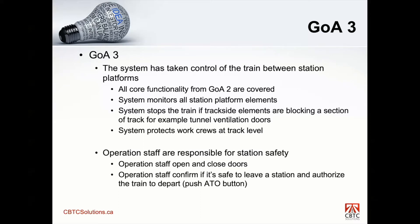Any elements along the track that can become an obstacle are fed into the system, and the system decides based on those inputs whether the train can progress forward or not, by controlling the movement authority. The system also protects crews at track level. If there are work crews working, a section of track may be closed and the train will stop before it gets into that work zone to protect them. So the automation between stations is under control of the system.